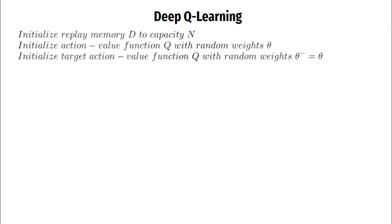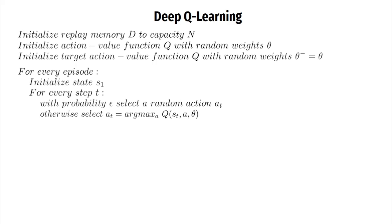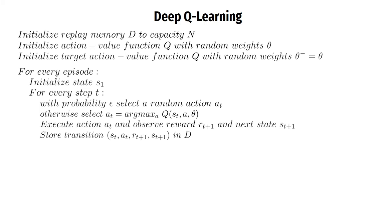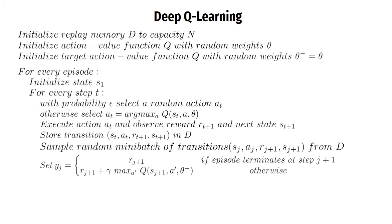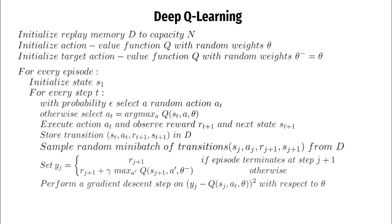We start by initializing our replay buffer, our online network, and our target network. For each episode we choose a starting state. For every step of the episode we select an action according to an epsilon-greedy policy, take that action, and observe the reward and next state. We store this transition in the replay buffer, then sample a mini-batch of transitions and calculate the targets using the target network. We perform a gradient descent step minimizing the MSE loss between targets and current values, and after every C steps we update the target network.